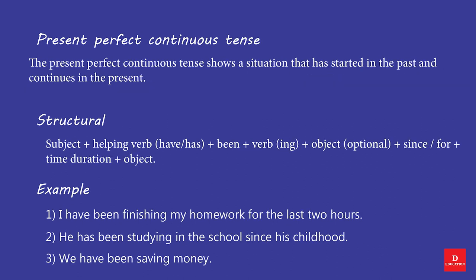Present Perfect Continuous Tense. This tense shows a situation that has started in the past and continues in the present. Structure: Subject + have/has + been + Verb (-ing) + Object (optional) + since/for + Time Duration. Examples: I have been finishing my homework for the last two hours. He has been studying in the school since his childhood. We have been saving money.